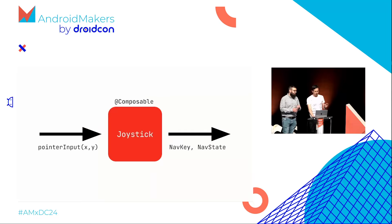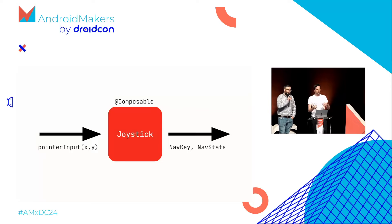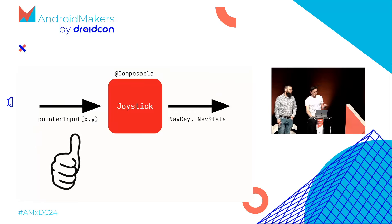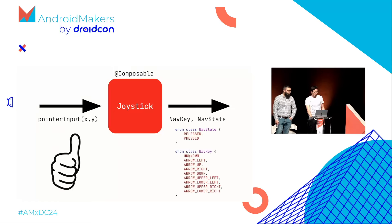Before coding, I like to think in terms of functional programming, which works well with Kotlin and Jetpack Compose. The input is a thumb — the user's thumb has a pointer input with coordinates X and Y. The output is two things: whether we're in a press or release state, and what direction the user is asking for — left, up, right, down, with possible diagonals.